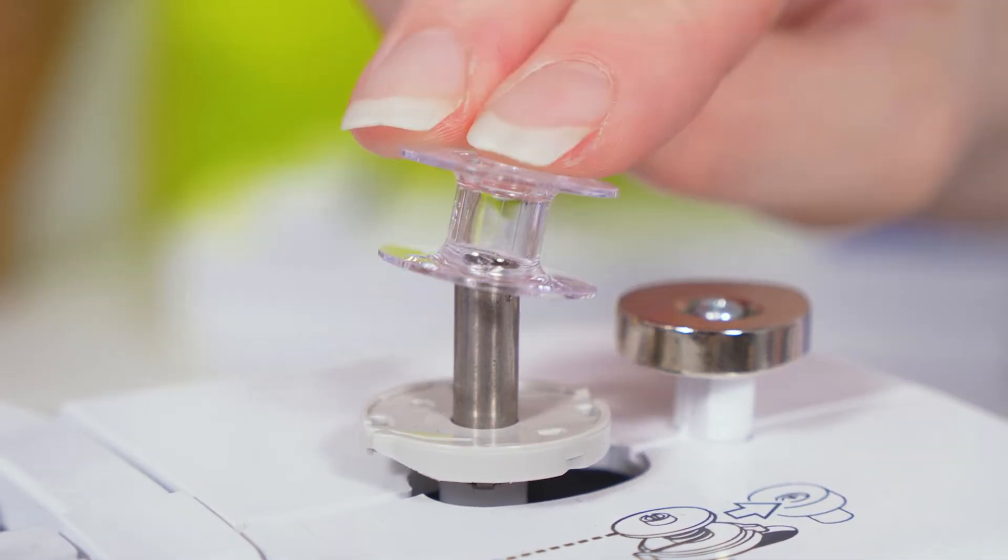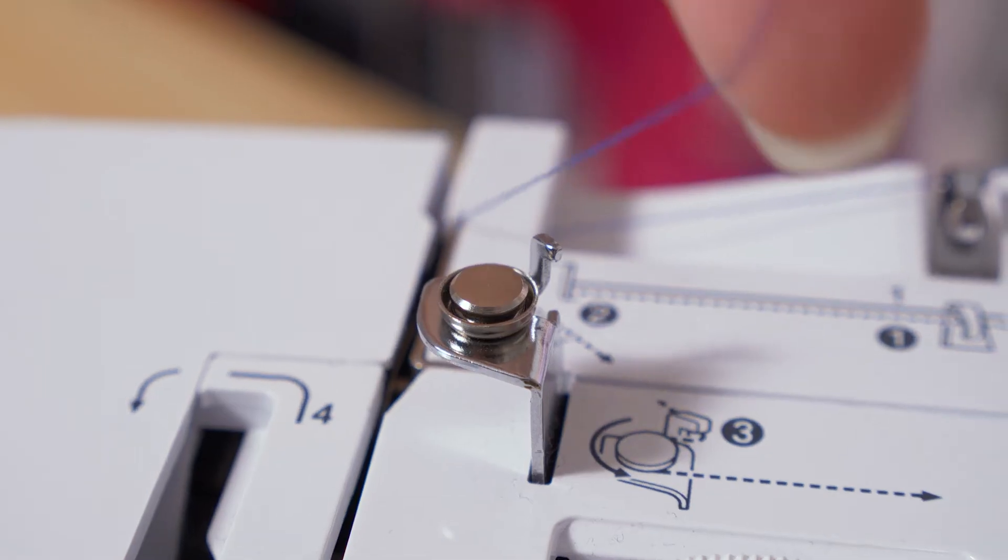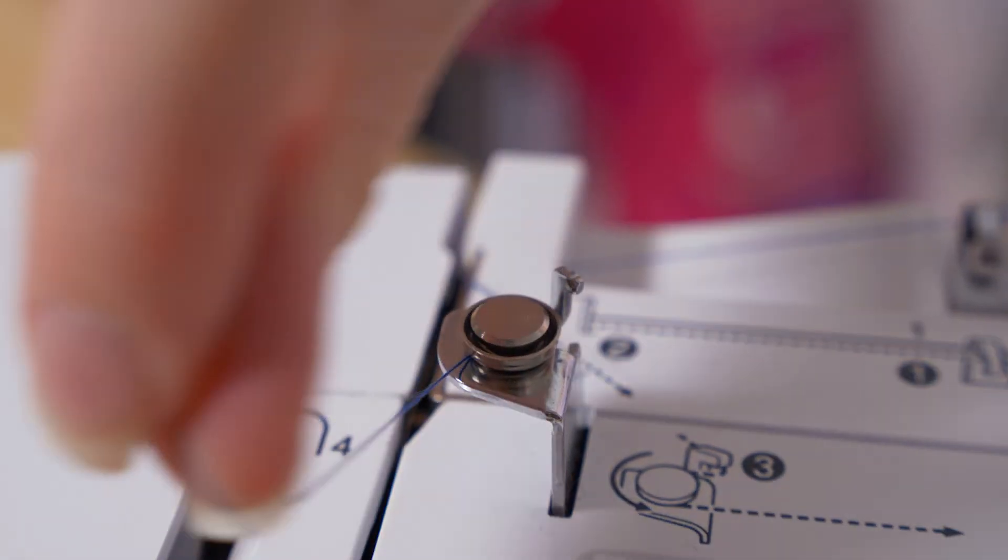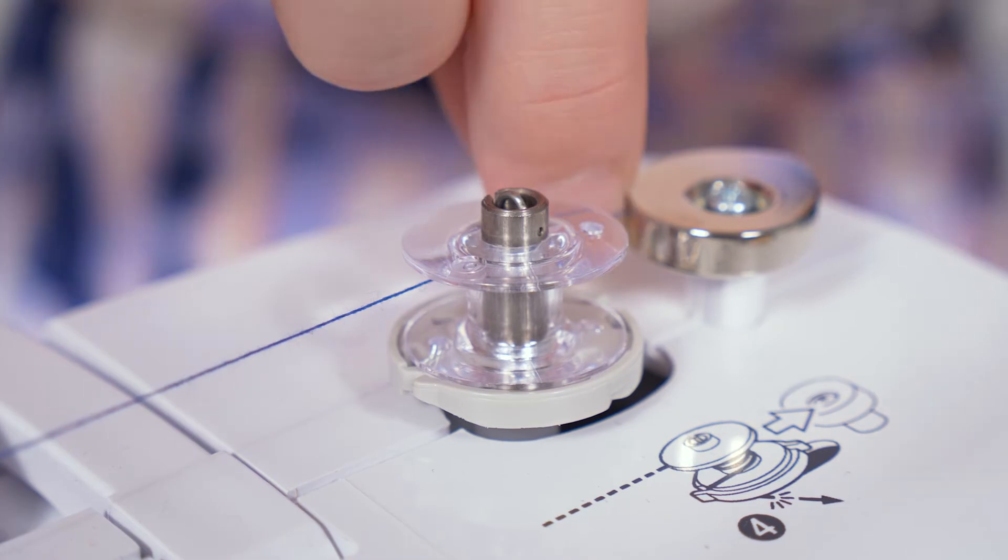Next, place your bobbin on the bobbin winder and follow the dotted line on top of the machine to bring your thread over to the bobbin winder. Wind it around the bobbin clockwise and pull the thread through the slot at the bottom to cut the excess off.